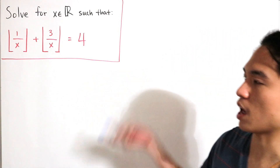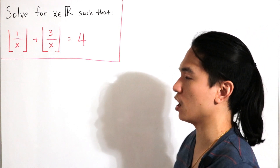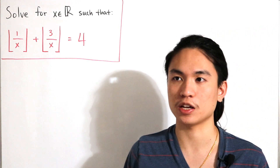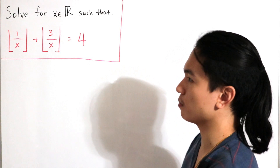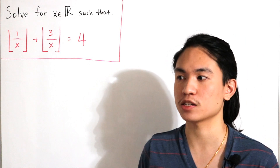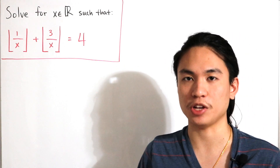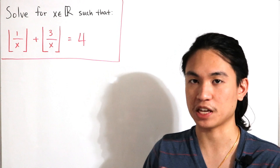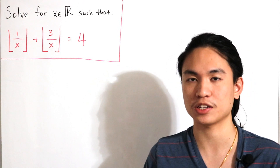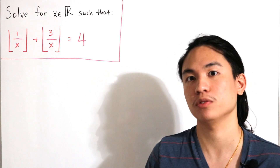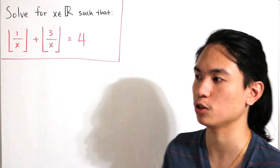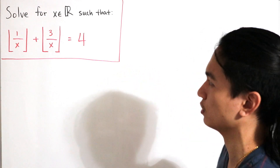Using that property, we know that the floor function equals some integer k such that k is less than or equal to the input, and the input is strictly less than k plus 1 — because the value falls strictly between those two consecutive integers.